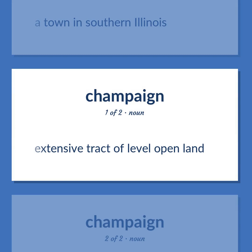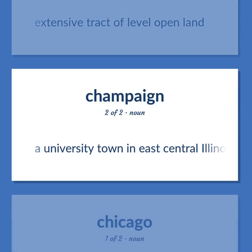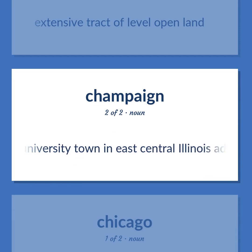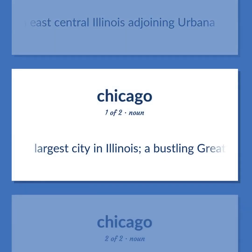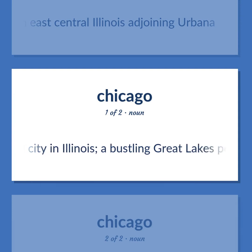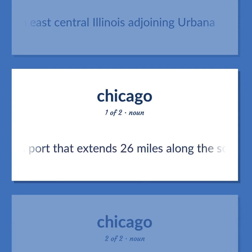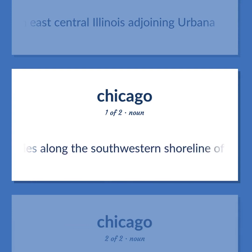Plain: An extensive tract of level open land. Champaign: A university town in east-central Illinois adjoining Urbana. Chicago: Largest city in Illinois, a bustling Great Lakes port that extends 26 miles along the southwestern shoreline of Lake Michigan.